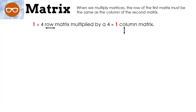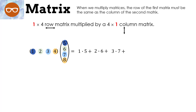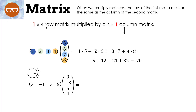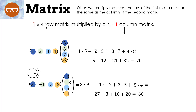Now that we've added and subtracted, let's look at multiplying. When we multiply matrices, the number of columns of the first matrix must equal the number of rows of the second matrix. We multiply and then add: 1 times 5 plus 2 times 6 plus 3 times 7 plus 4 times 8, which adds up to 70. Now pause the video, try the next one, then press play and we'll work it together. We take 3 times 9 plus negative 1 times negative 3 plus 2 times 5 plus 5 times 4, which gives us 60.